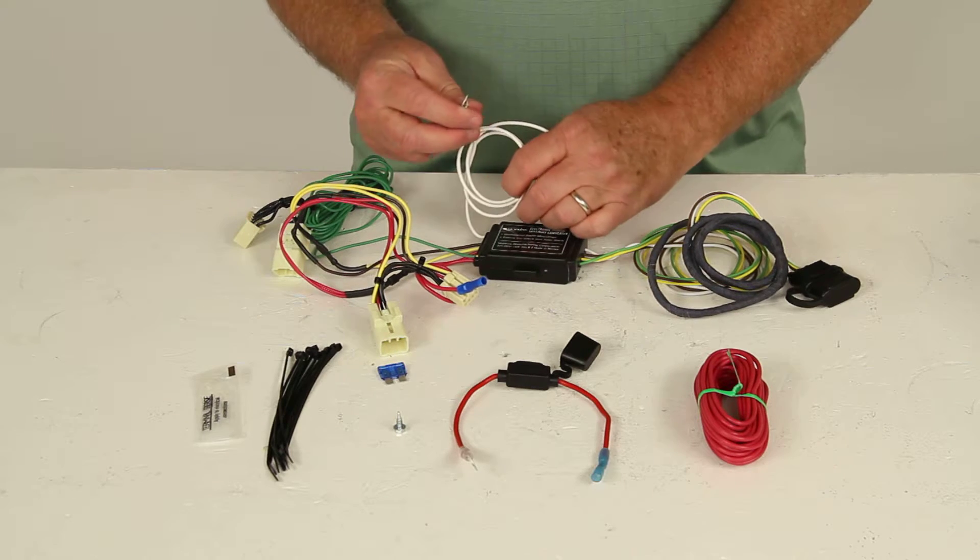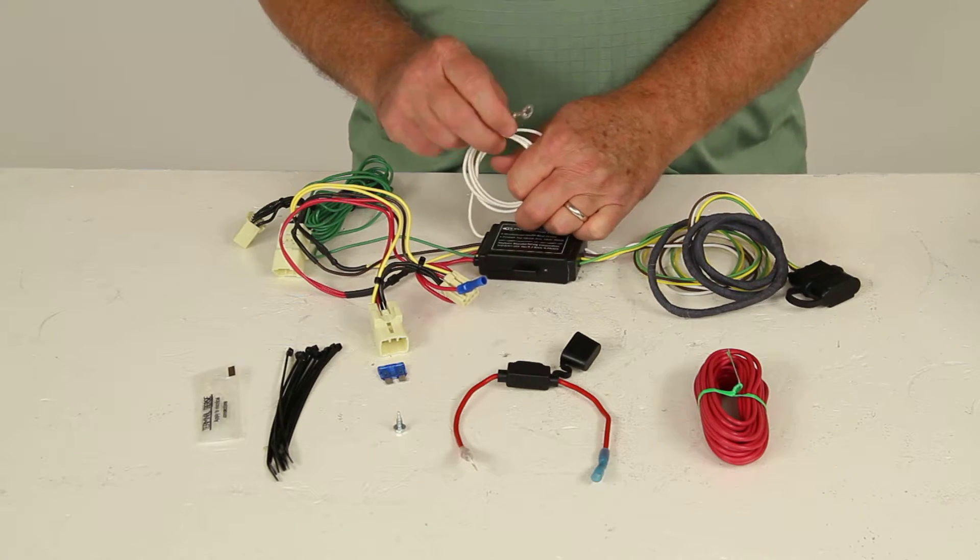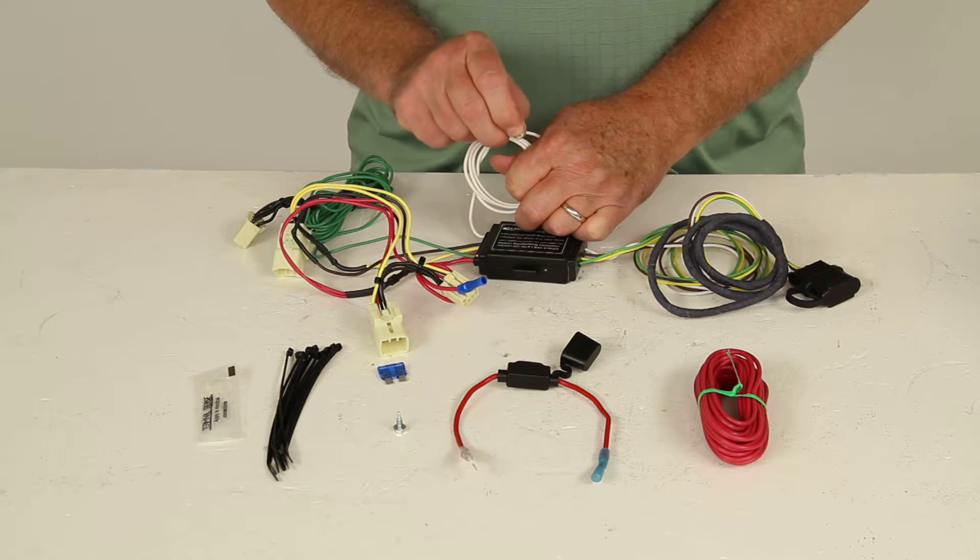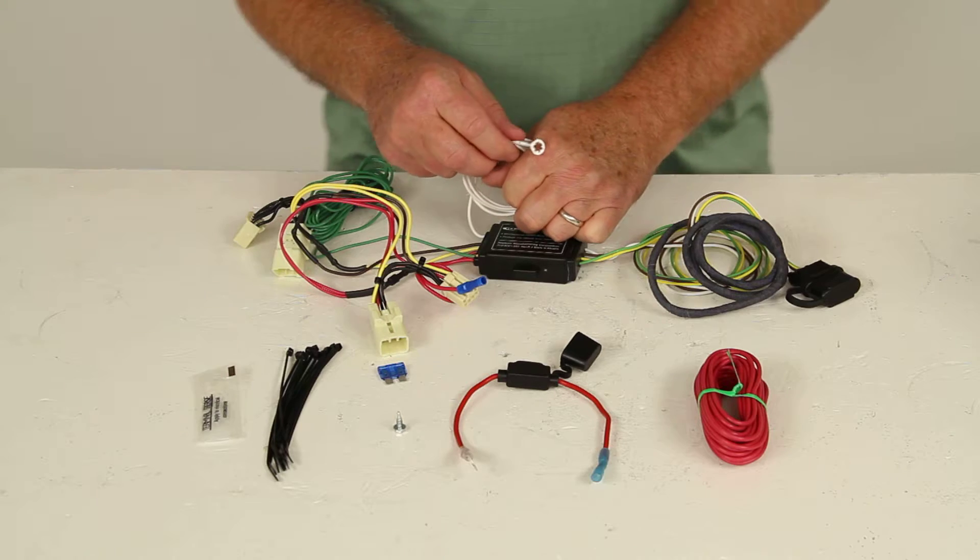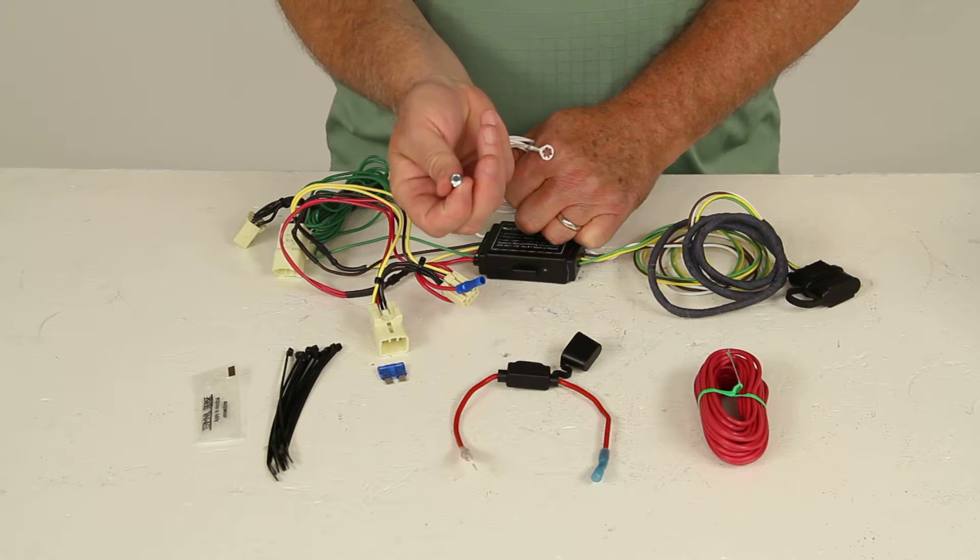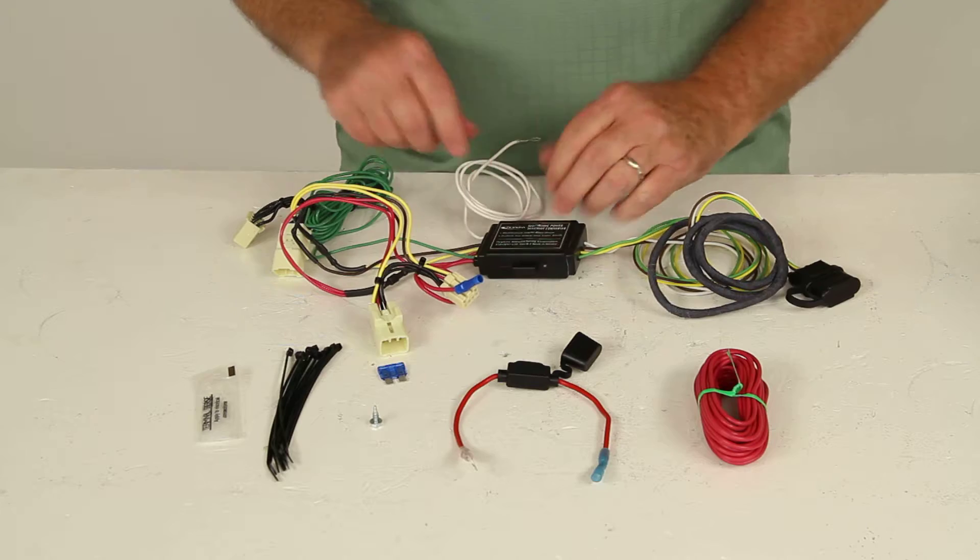Now the white wire right here that has an eyelet on the end, this will need to be tightened down to a good ground. So if there's a screw on your car that will give you a good clean ground directly to metal, or you can drill a hole and use this grounding screw to help get you a good clean ground.